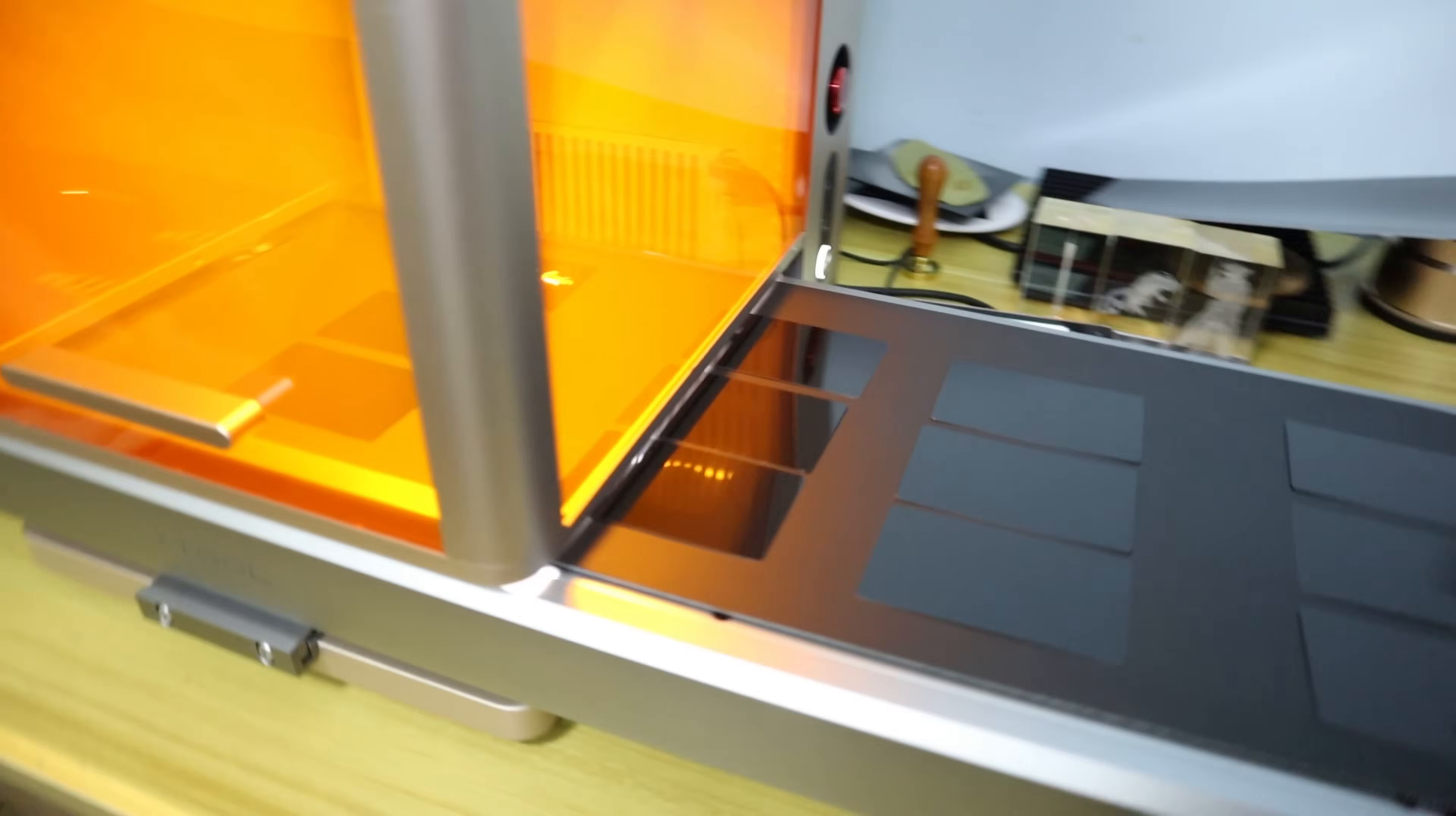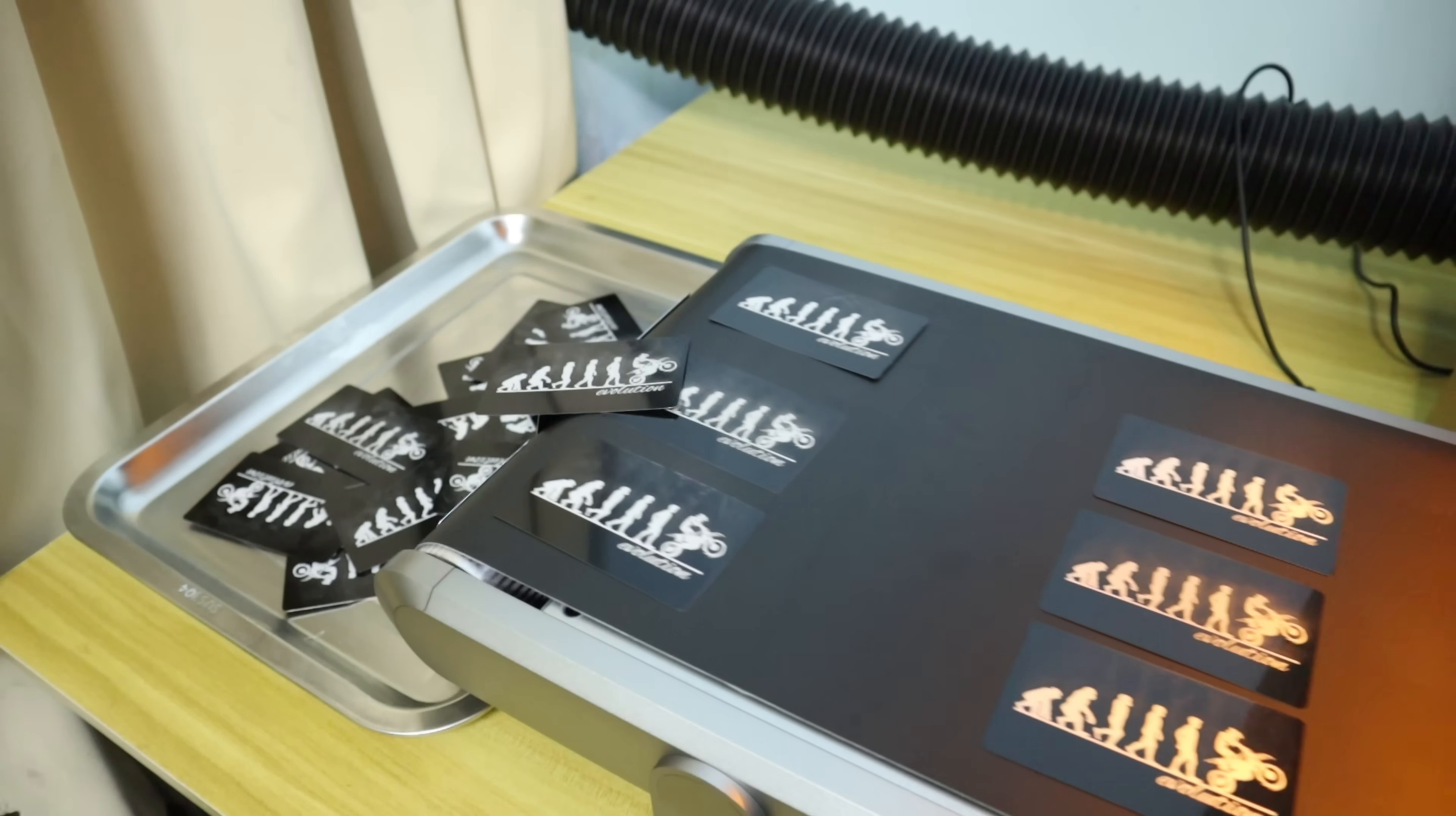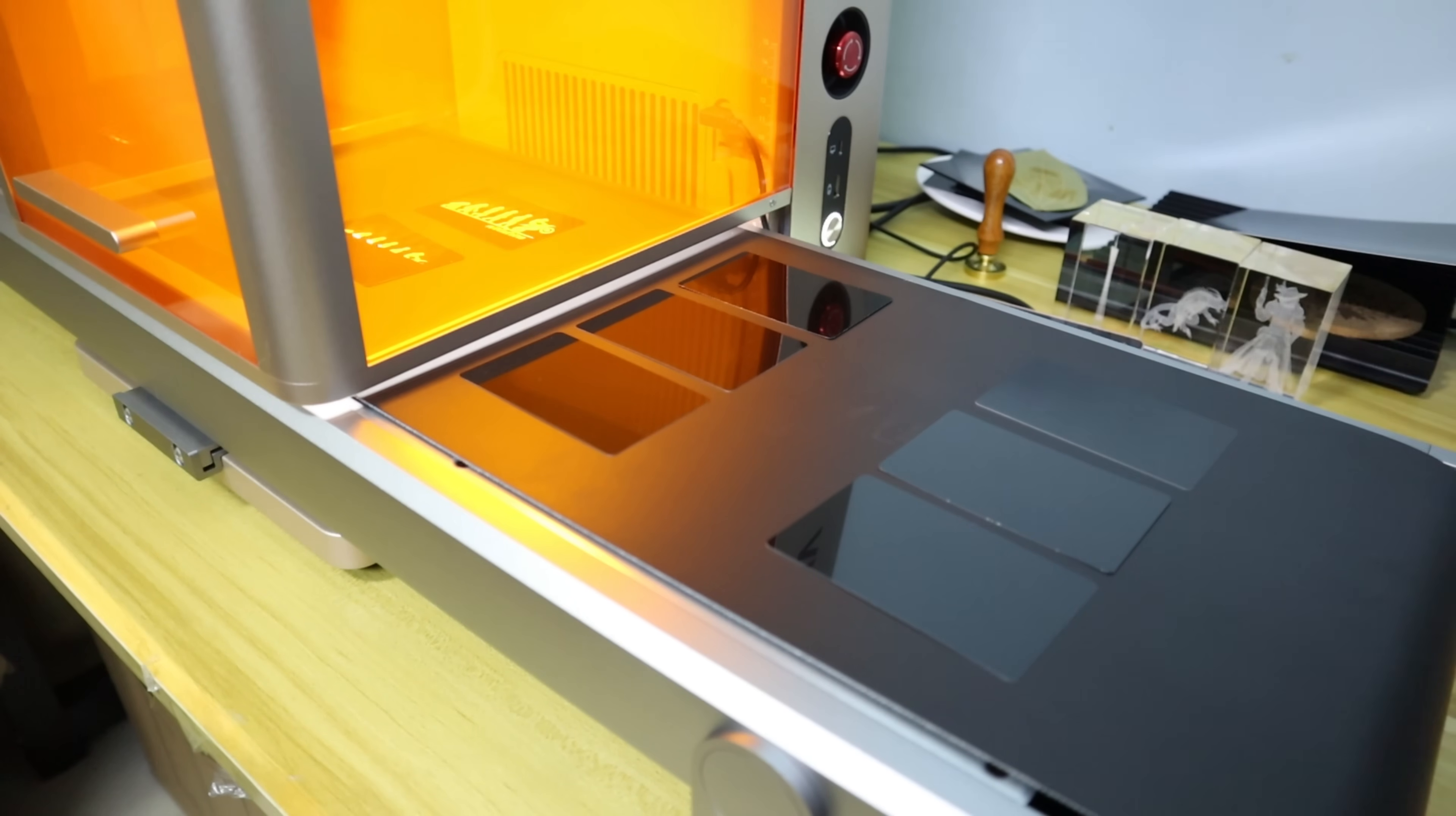The operation for batch engraving is highly convenient. The principle relies on a high-definition camera to identify materials of the same shape, then precisely fill patterns automatically into the designated position on the materials. For my case, as an example, engraving a single card takes about 1 minute. With batch engraving, I can produce 30 business cards in about 30 minutes. During automatic batch engraving, the high-definition camera automatically identifies the materials and fills patterns. And what I need to do is continuously feed materials onto the conveyor.